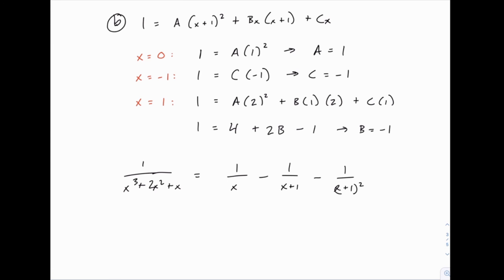So once you go to solve for a, b, and c, you always start by multiplying both sides by the common denominator. Then you have a choice: you can expand everything out and set powers of x, x squared, and so on equal to each other on both sides, or you can pick test values. I personally prefer the test values method. But as long as you can do one of these two approaches, you can solve all the problems — just pick the one you prefer and stick to that.